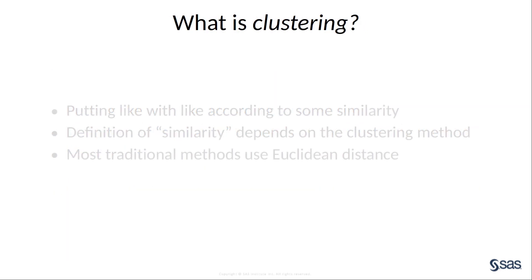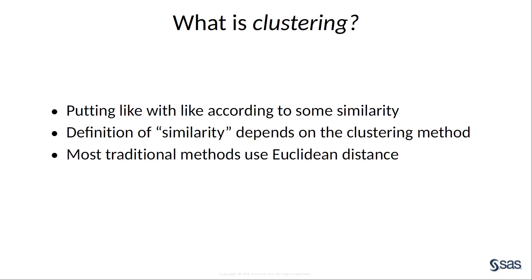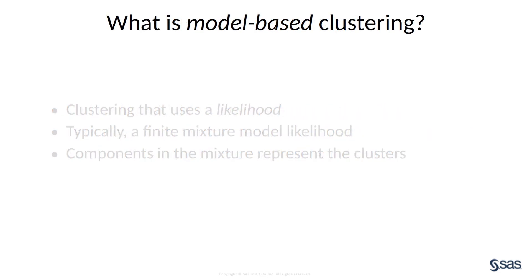What is clustering? Very simply, it's grouping similar items together. Deciding which items are similar to each other depends on the clustering method, and many clustering methods use the straight line or Euclidean distance to decide how similar two items are.